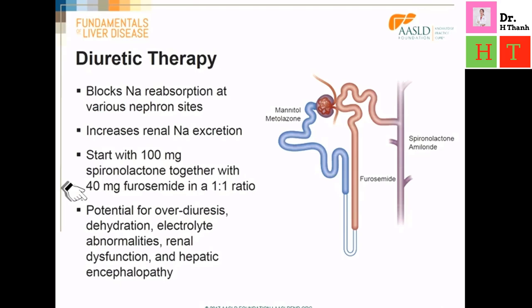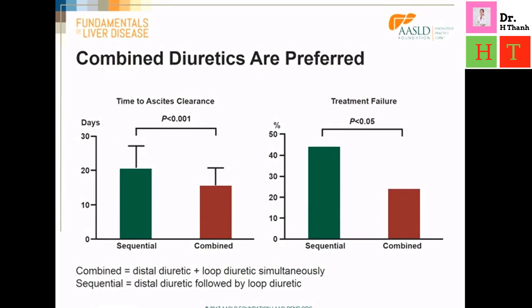Patients on diuretics need to be monitored for dehydration due to overdiuresis, renal dysfunction, and electrolyte abnormalities which can lead to hepatic encephalopathy. It has been demonstrated that patients placed on combined diuretics — a distal diuretic and a loop diuretic simultaneously — do significantly better than patients prescribed sequential diuretics, such as a distal diuretic followed by a loop diuretic. The use of combined diuretics can lead to quicker ascites clearance, less treatment failure, and fewer complications.